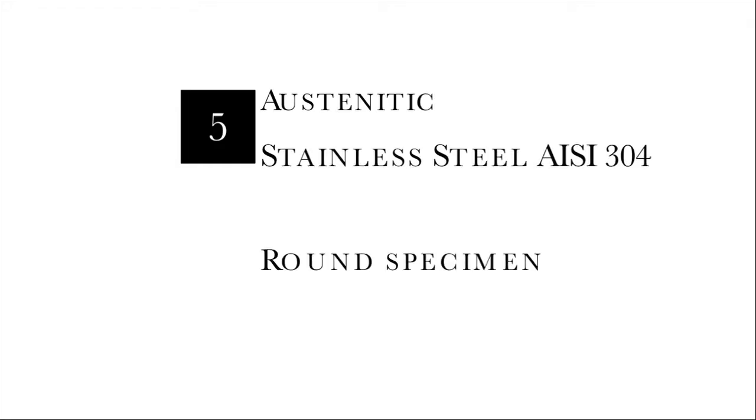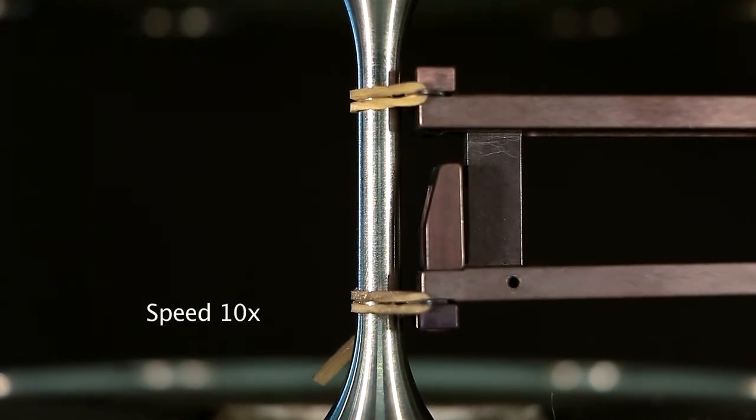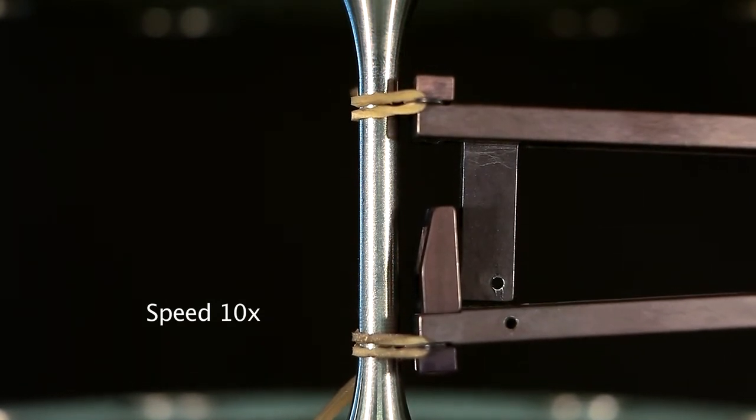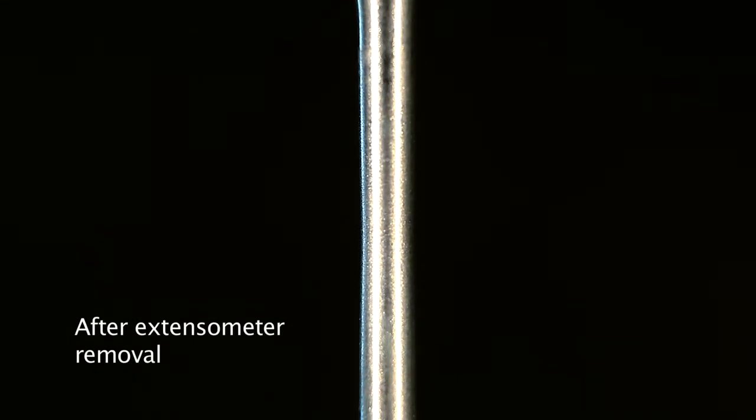Test 5: Austenitic stainless steel. Again, this metal is so ductile that the test needs to be finalized after the extensometer removal, having saturated the maximum allowed clip range.